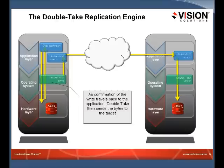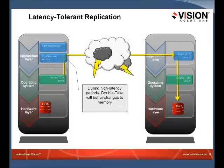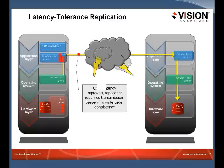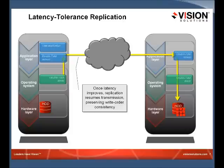A common question is: what happens if the source and target can't talk to each other — if the network goes down? Initially, we queue to memory, which is a configurable setting where you tell DoubleTake exactly how much memory to use. Once available memory is used up, we begin queuing to disk. Once that latency is resolved — whether a network error or general overload — we send those queued replication ops to the target server in the exact same order they were made on the source server. Maintaining that write order preservation is critical to data integrity.